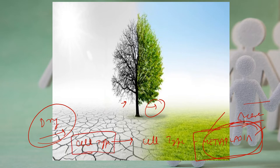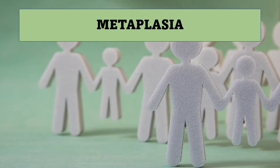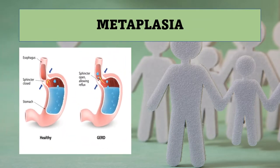Metaplasia means a change in cell type from one differentiated form to another. What does this have to do with the salmon colored patch in the esophagus? The normal esophagus on endoscopy appears glossy and pale pink, whereas in Barrett's you see a salmon red appearance. Whenever you see a salmon patch in the lower end of esophagus, you have to think of Barrett's - and it's important to biopsy it. What histological change do you expect? That's what we're going to see.